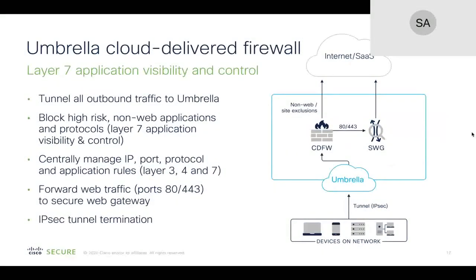On the cloud-delivered firewall side, this covers non-web traffic since not all applications use port 80 and port 443. Using the cloud-delivered firewall, you can block high-risk non-web applications and protocols, detect layer 7 applications, and apply filtering. Use cases include detecting Tor browsers or blocking FTP file transfers traversing the internet — all enforced directly from the Umbrella SaaS-based solution.